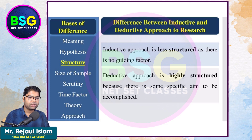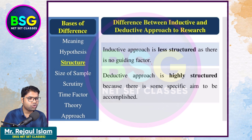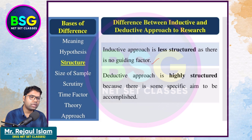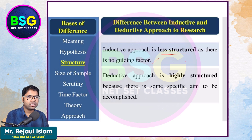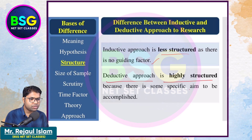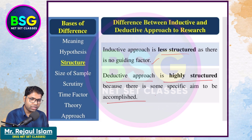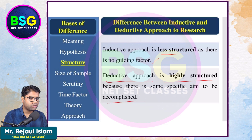The inductive approach is less structured, meaning there is no guiding factor — we observe that Ram is mortal, Sham is mortal, and from this particular zone we build up the data. The deductive approach, however, is highly structured — when we say all men are mortal, we verify it by applying it to Ram. So deductive is highly structured. Which is highly structured and which is less structured?